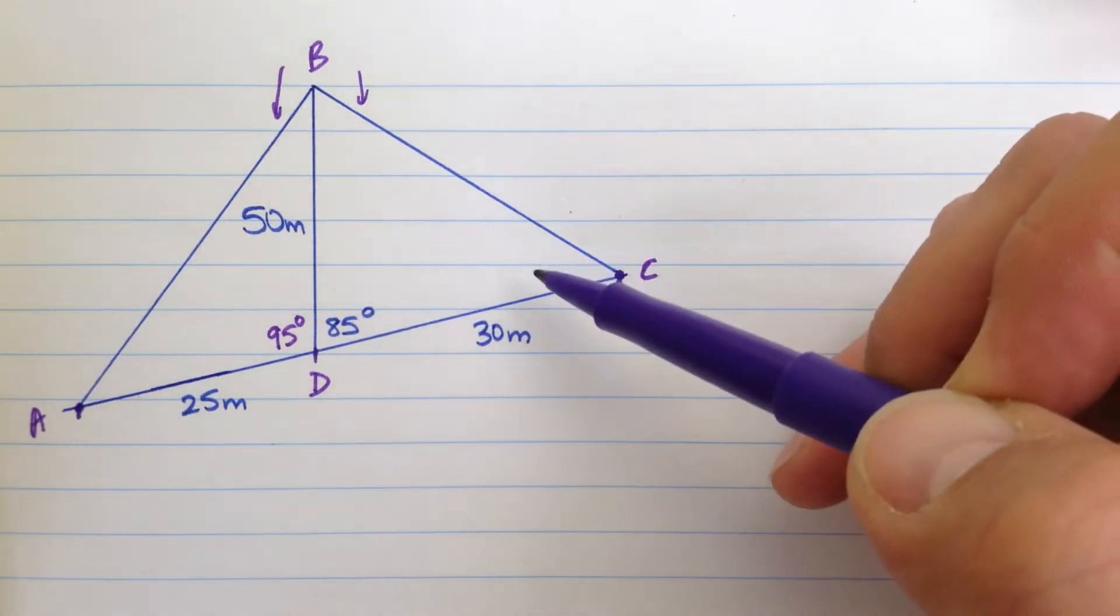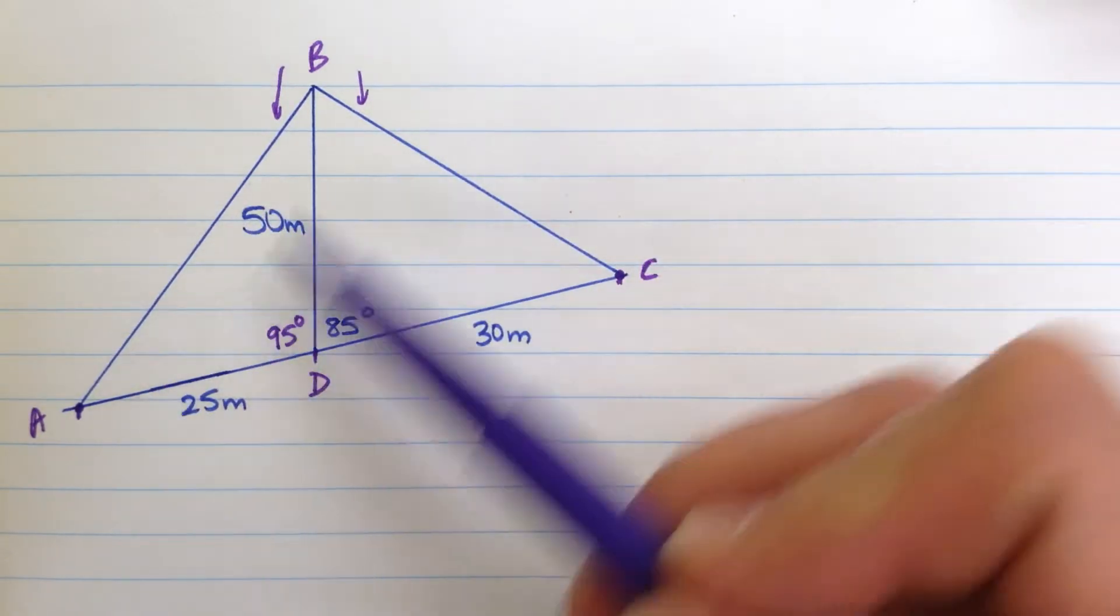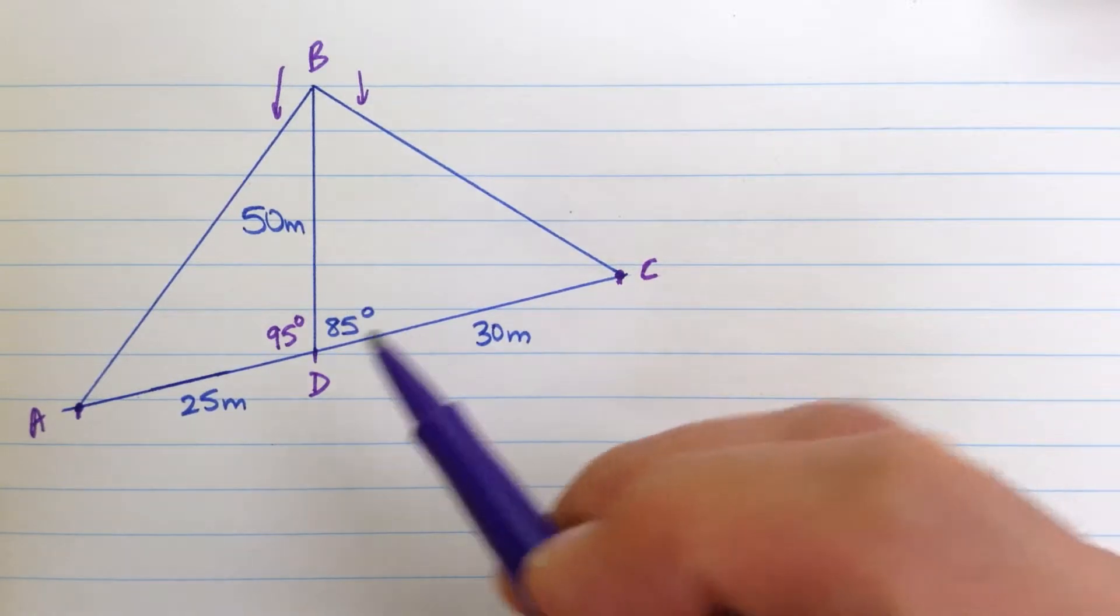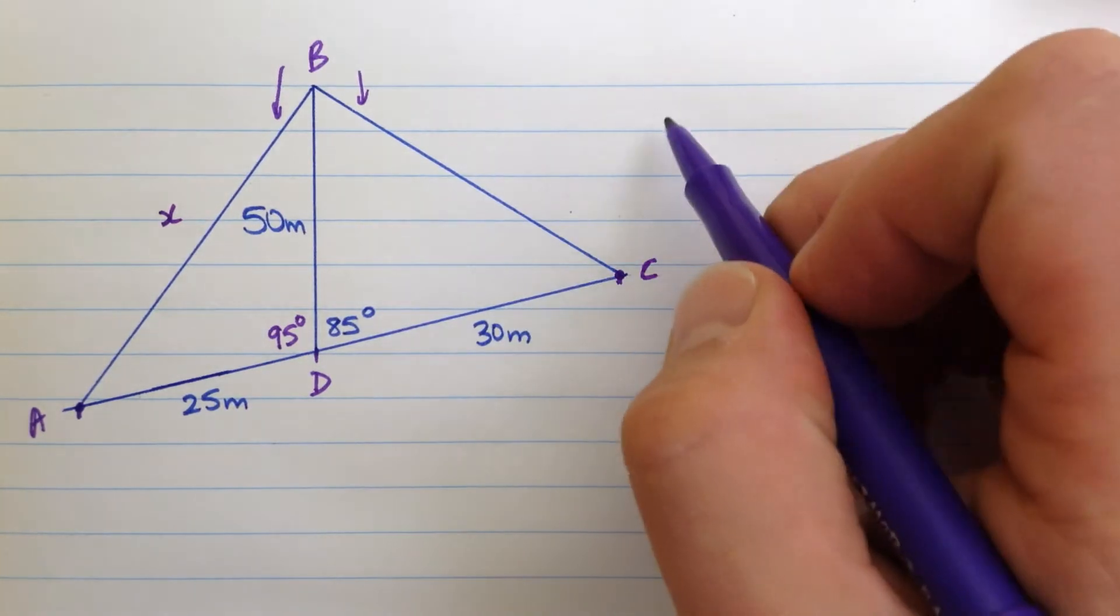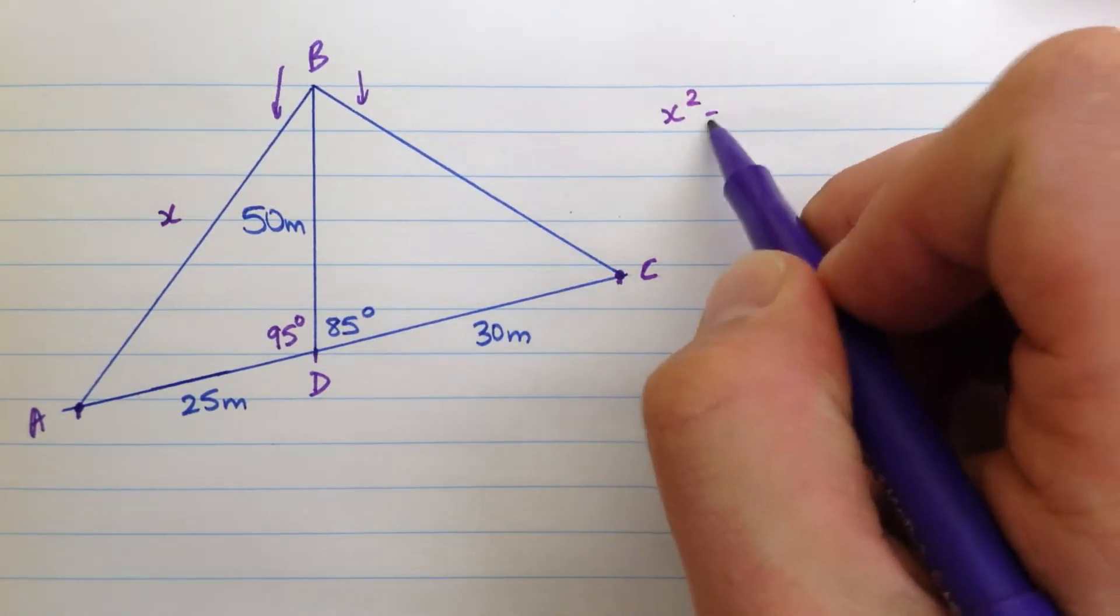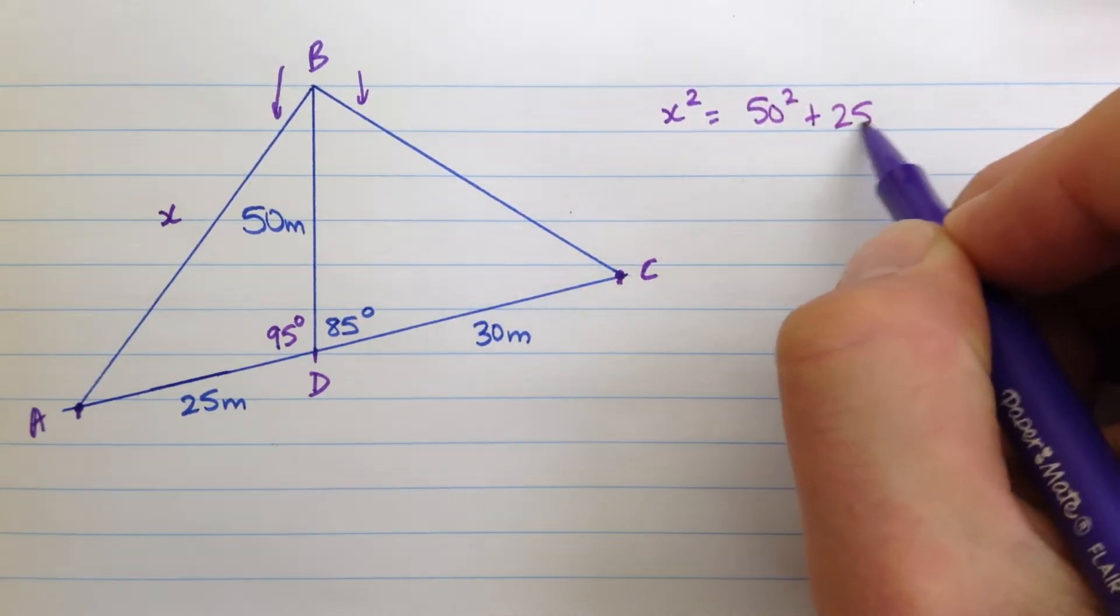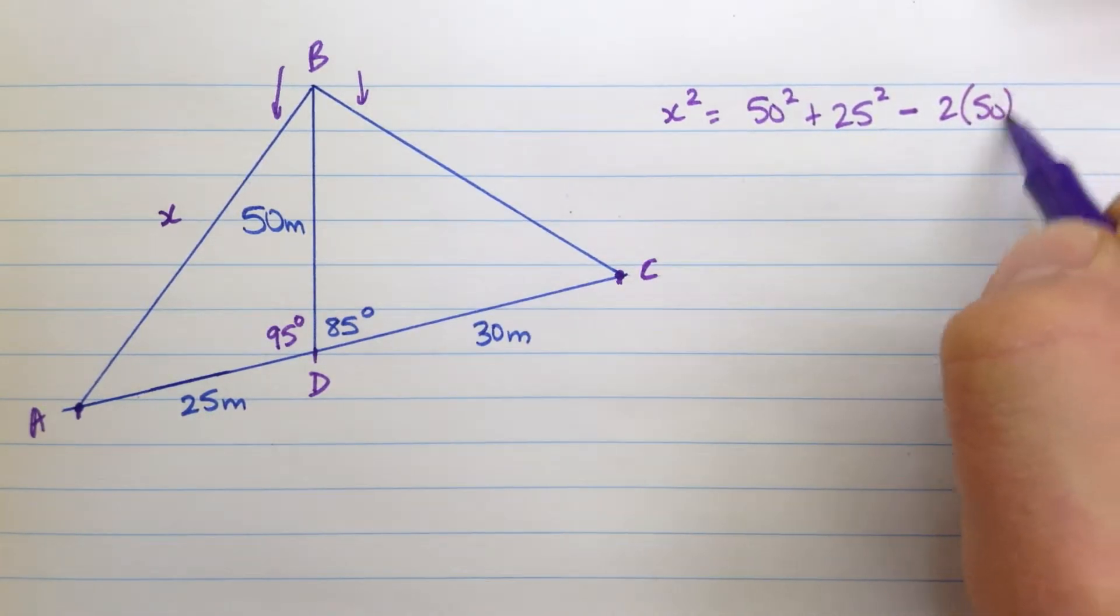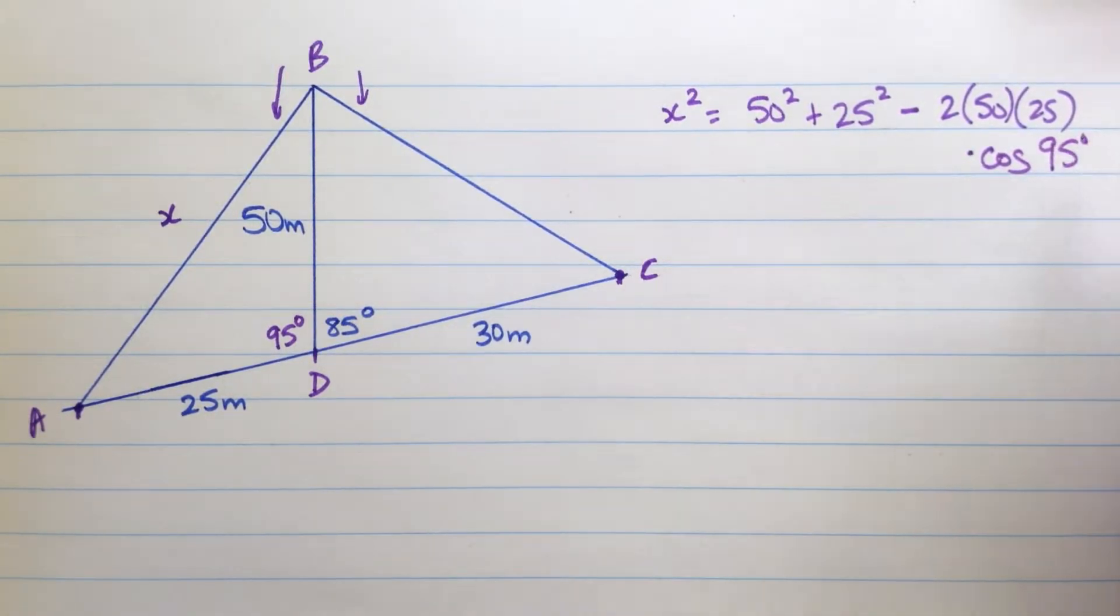But we're going to use cosine law to solve these and try to find them. So let's start with this one ABD over here. I know two sides and I have the angle that is in between them. And I want to try to find this opposite side. So let's call that x. And I know that x squared is equal to the square of the other two sides, 50 squared plus 25 squared minus 2 times those two sides, 50, 25, times the cosine of the angle between them, 95 degrees.